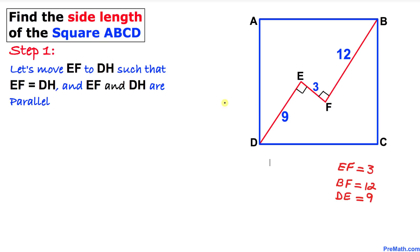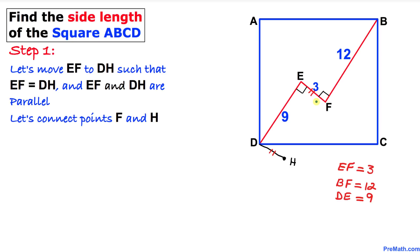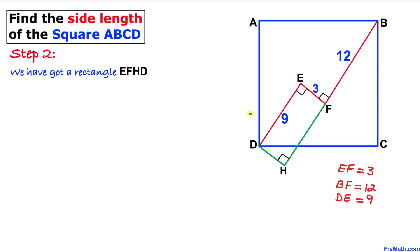Let's get started with the solution. Our very first step is some construction. We are going to move line segment EF to point DH such that line segment EF equals line segment DH, and moreover these two line segments are parallel to each other. Then we connect points F and H.